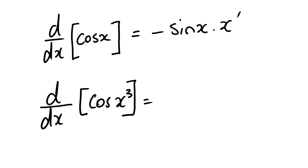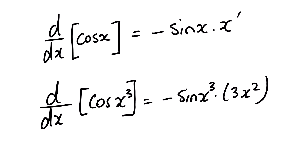For example, the derivative of cos(x³): the derivative of x³ is 3x². This will give us negative 3x² sin(x³).